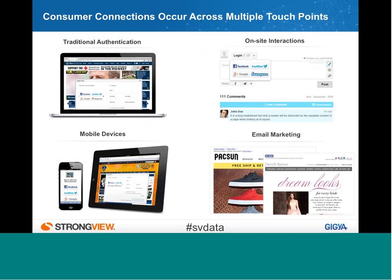Social login isn't limited to the sign-up and registration flow — you can have different locations where you ask users to connect. For example, on-site interactions like review or comment sections, or joining a loyalty program. This can happen on different devices: mobile, tablet. We're starting to see interesting things with kiosks and in-store point-of-sale interactions. Through email, you can also have calls to action in the emails you send to get people to sign up and register.